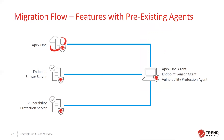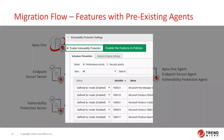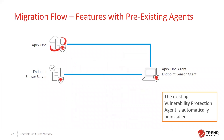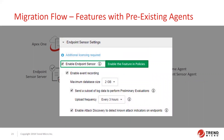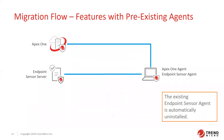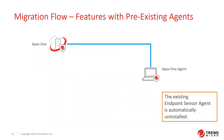If you currently have a vulnerability protection server or endpoint sensor, you'll see three individual agents on the endpoint: the Apex One agent, the endpoint sensor, and the vulnerability protection agent. However, once you enable vulnerability protection in Apex Central and deploy that policy, the vulnerability protection standalone agent automatically uninstalls and the Apex One agent takes over that functionality. The same happens with the endpoint sensor — after enabling that policy and deploying, you end up with just one single Apex One agent.